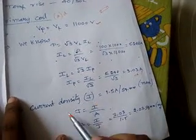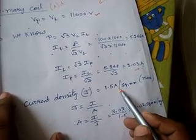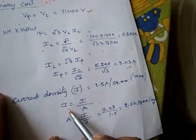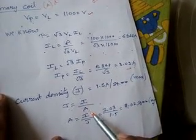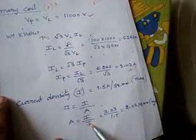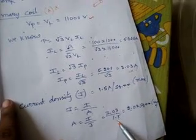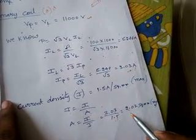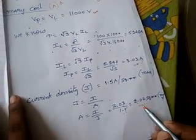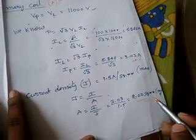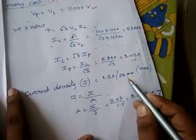So conductor area, I am representing as J. That is, in the customer specification it is given as 1.5 ampere per square mm. We know that J equal to I by A, current per area. Conductor area from this A equal to I by J. So we substitute 3.03 by 1.5, 1.5 current density, we got 2.02 square mm area. So conductor area is 2.02 square mm, we have calculated from the customer given 1.5 ampere per square mm current density.